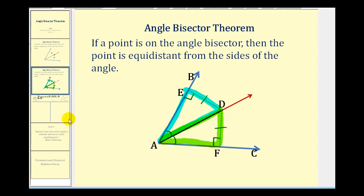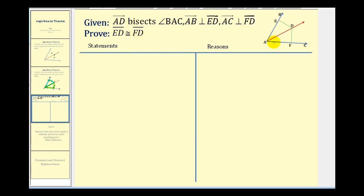Let's go ahead and write this out in a two-column proof. We're given that ray AD bisects angle BAC, that ray AB is perpendicular to segment ED, and ray AC is perpendicular to segment FD. We'll start by stating the given.